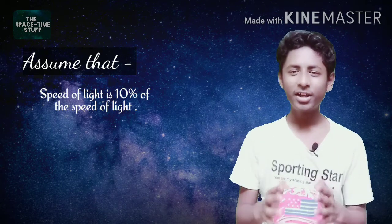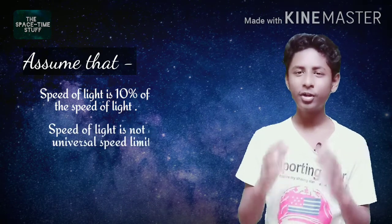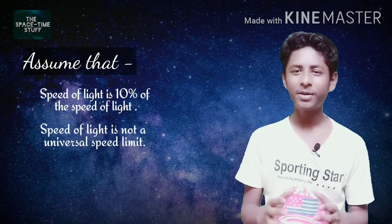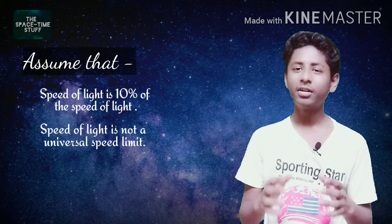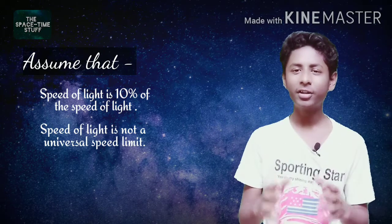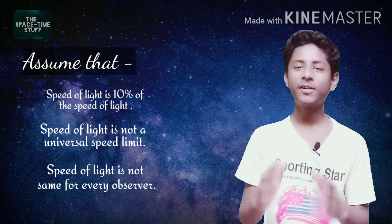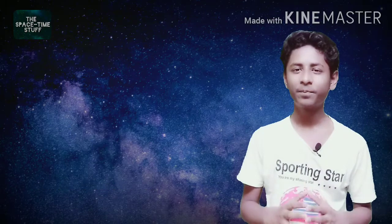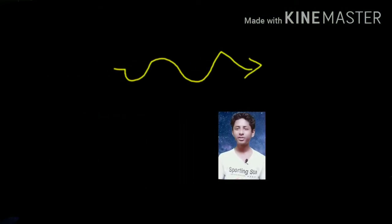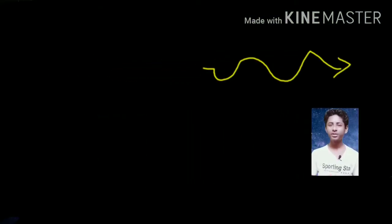In our assumption, the speed of light is not a universal speed limit and the speed of light is not the same for every observer — it can be changed with different reference frames. Now assume you are traveling at this speed, which is 10% of the speed of light, along with a light beam. What would you expect to see?